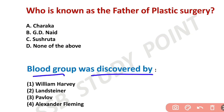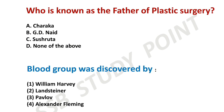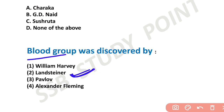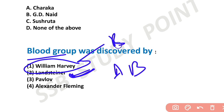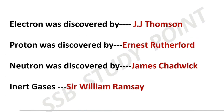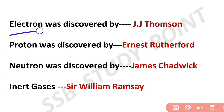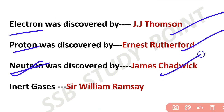Blood Group was discovered by Karl Landsteiner. Blood Circulation was discovered by William Harvey — both are very important. For subatomic particles: the electron was discovered by J.J. Thomson, the proton by Rutherford, and the neutron by James Chadwick.